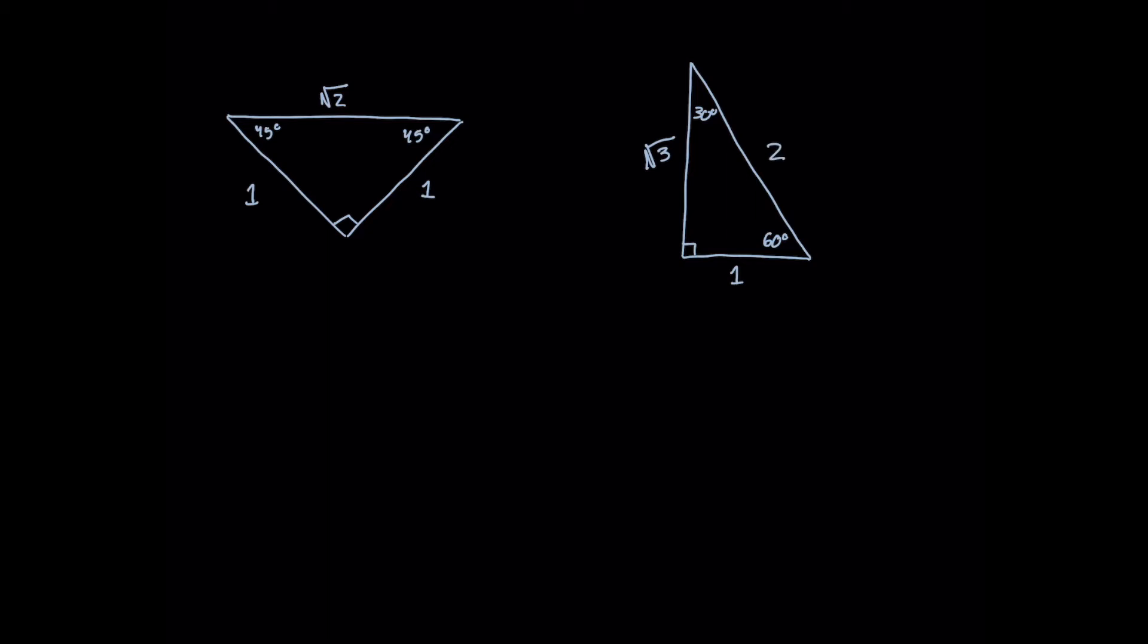Finally, once we memorize these and we remember our rule SOH CAH TOA, which corresponds to sine is opposite over hypotenuse, cosine is adjacent over hypotenuse, and tangent is opposite over adjacent, we can calculate any of these values.